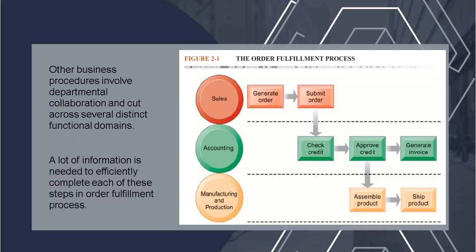Other business procedures involve departmental collaboration and cut across several distinct functional domains. A lot of information is needed to efficiently complete each of these steps. For example, the sales division first receives the sales order, then it goes to Accounting to check credit before shipment to make sure the customer can pay. Next, the Production Division either creates the goods or removes them from inventory once credit is confirmed, then the item is shipped. The Accounting Division then produces a bill or invoice notifying the customer, and after the product is delivered, the sales team gets ready to assist the client.